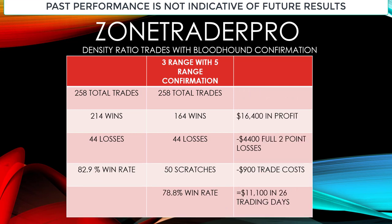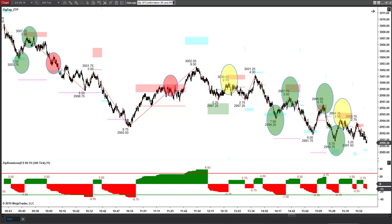Out of 258 total trades — 164 wins, 44 losses, and 50 scratches — that gives roughly $16,400 in profit taking a two point profit and two point loss on each trade. Including $900 in trade costs figured at $3.50 per round trip times 258 total trades, that would bring in approximately $11,100 over the 26 trading days at that 78.8% win rate. The exit was kept simple with a two point exit and a market order entry.